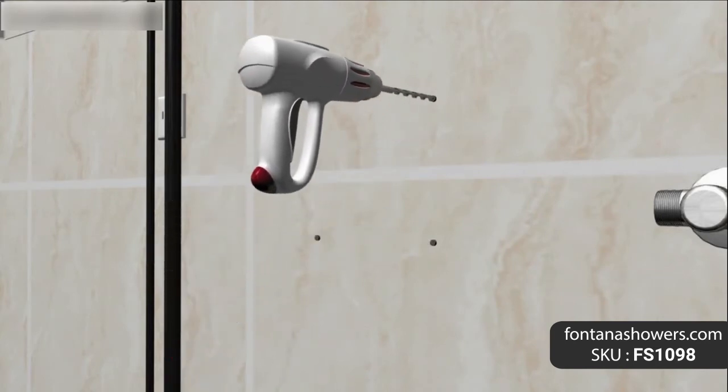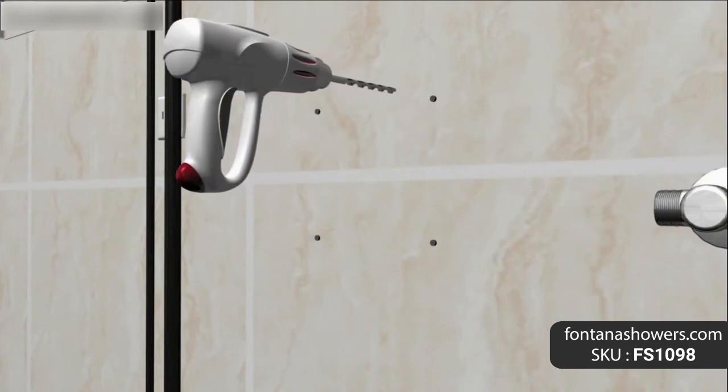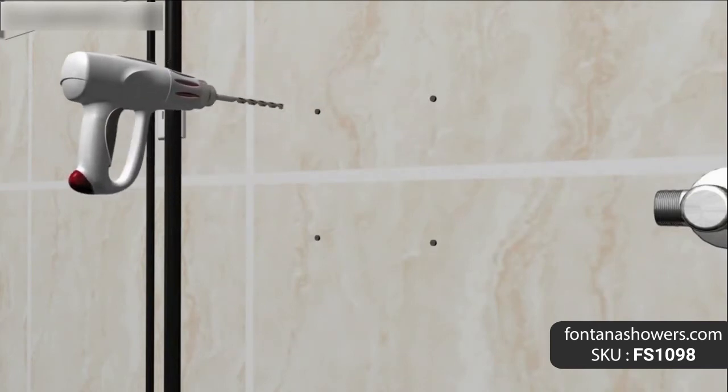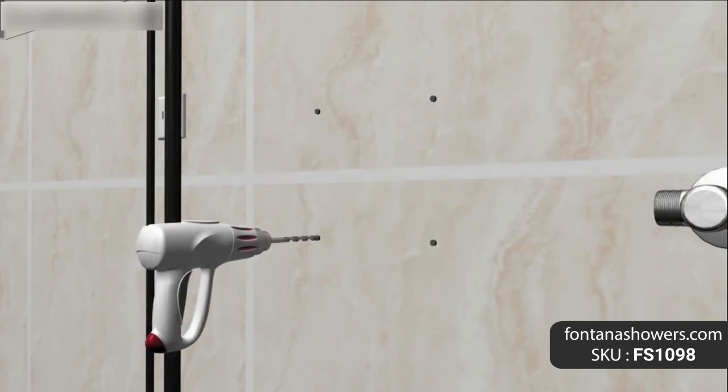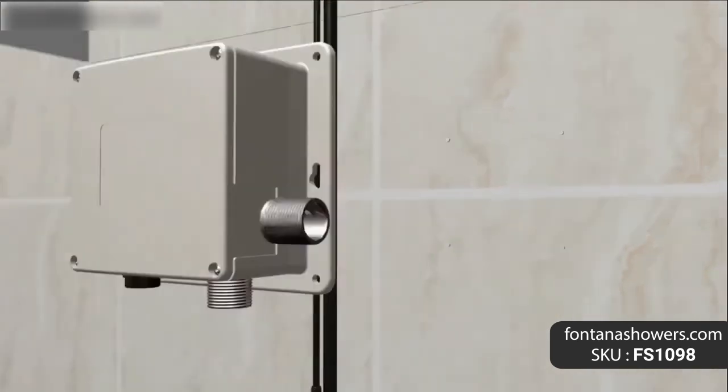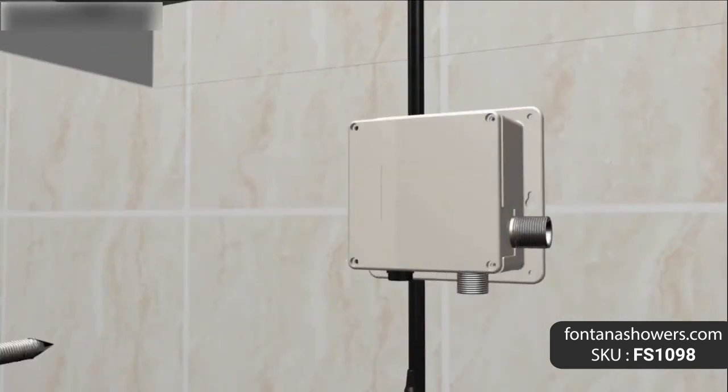Brand name: Fontana Showers. Model number: FS1098. Type: Motion sensor sink faucet. Style: Contemporary. Finish: Oil rubbed bronze. Faucet mount: Single hole. Faucet height: 6.69 inches (170mm). Spout length: 4.92 inches (125mm). Spout height: 3.93 inches (100mm). Installation type: Deck mount.